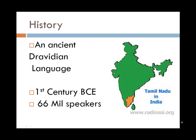Tamil is an ancient Dravidian language. Dravidian means South India. It is an official recognized language in the countries of India, Sri Lanka and Singapore, but there are significant Tamil speakers in many countries across the world. Some of the earliest records of Tamil have been dated back to the first century BC, and there are around 66 million speakers of Tamil across the world.